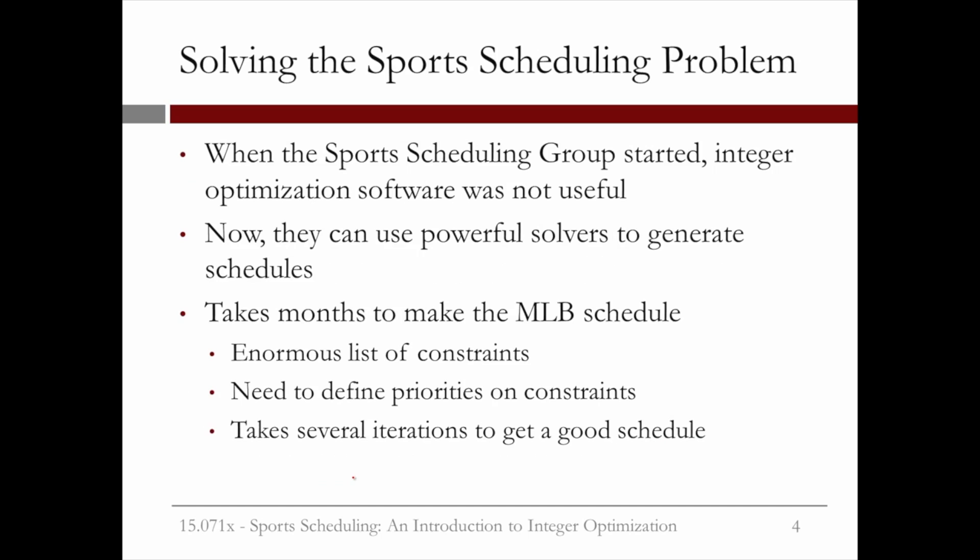So how about the sports scheduling problem? When the sports scheduling group was started in 1996, integer optimization software was too slow to be useful. Now they can use powerful solvers to generate sports schedules. Even with these solvers, it can take months to make the Major League Baseball schedule.